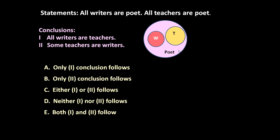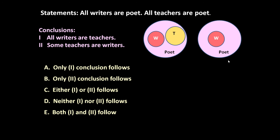These two statements can be represented by another method also. All writers are poets, all teachers are poets — and some of the teachers may be writers as well. So the teachers and writers circles may overlap inside the poets circle. It can also be represented by a third method.